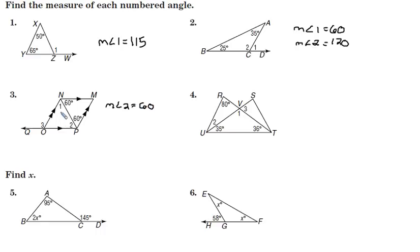And then the measure of angle 1, that is alternate exterior interior to this angle here, angle 60. So that angle 1 will also have that measure. And then 1 and 2 are the remote interior angles, and the sum of those will equal the exterior angle 3. So measure of angle 3 is 120.